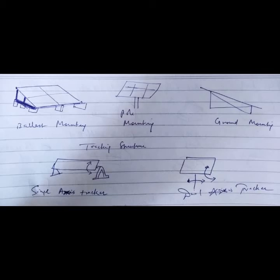Types of mounting include blast mounting, pole mounting, and ground mounting. Blast mounting is mounted on the roof or surface where small low wind is there and small tilt angle is present.